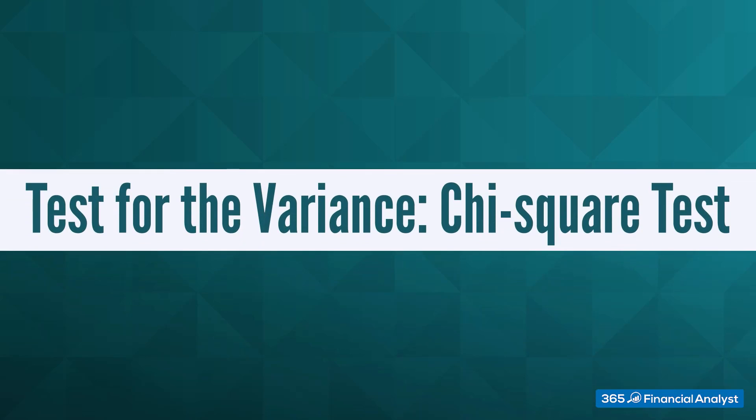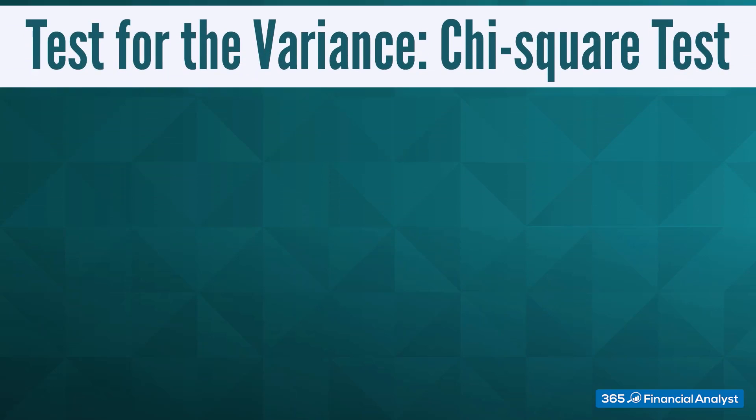Whenever we face a situation that requires us to test for the variance of a normally distributed population, that should ring a bell and tell us that we have to apply a chi-square test.